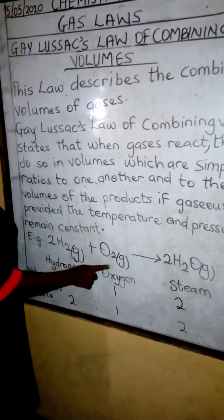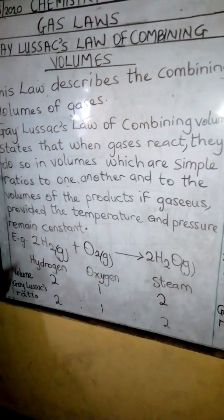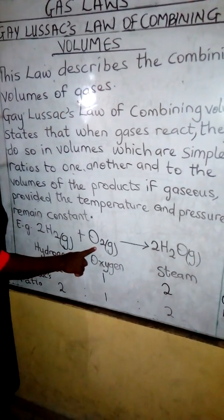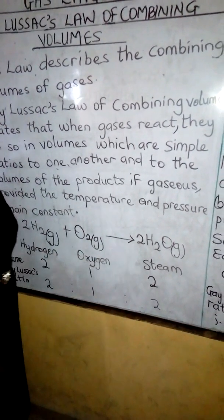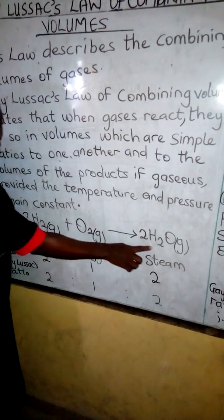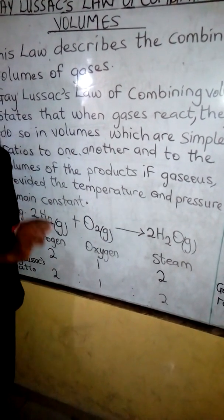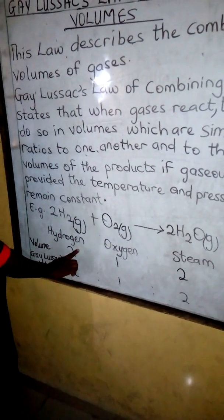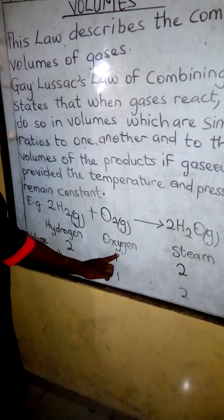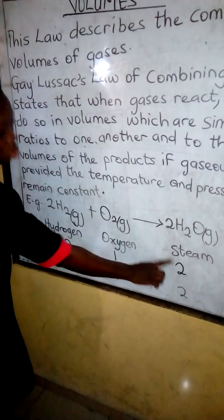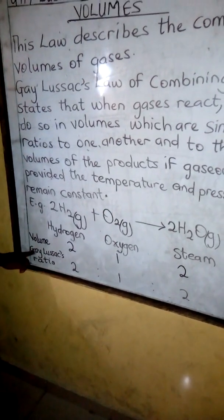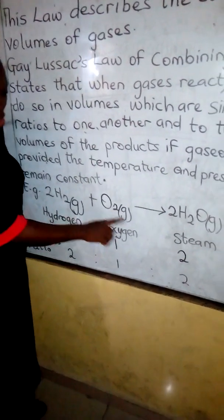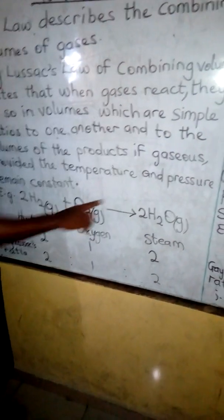For example, when hydrogen combines with oxygen to produce steam. From the equation of reaction, we have two volumes of hydrogen combining with one volume of oxygen to produce two volumes of steam — steam because this water molecule is in gaseous form. So we have two H₂ molecules combining with one O₂ molecule to produce two molecules of steam. From Gay-Lussac's ratio: 2 H₂ : 1 O₂ : 2 steam.